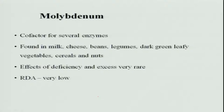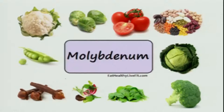Molybdenum is a cofactor for several enzymes and is found in milk, cheese, legumes, green leafy vegetables, cereals, and nuts. Effects of deficiency and excess are very rare because these foods are widely available in large quantities. The RDI is very low, and almost all fruits, vegetables, cereals, grains, nuts, and beans contain molybdenum.